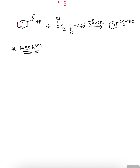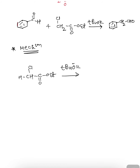In the first step of the mechanism, the alpha halo ester CH₂Cl-COOEt reacts with tertiary butoxide as the base. This base will abstract the hydrogen atom, resulting in the formation of a negatively charged carbanion, CH⁻Cl, with the remaining ester structure intact. This carbanion will then make a nucleophilic attack.